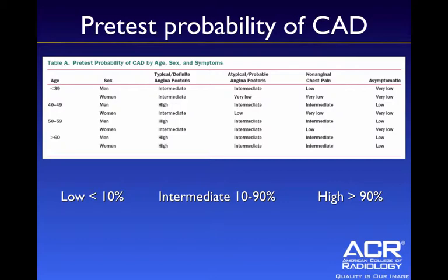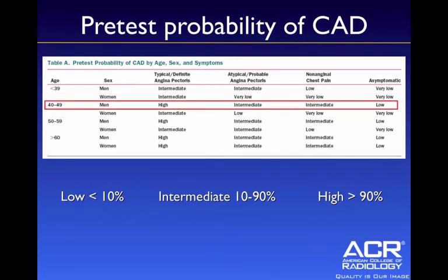The majority of patients are probably going to fall into the intermediate category with a pretest probability of 10 to 90%. As an example, a 40 to 49 year old male who has atypical probable anginal chest pain falls into the intermediate category. If the patient was asymptomatic, they would fall into the low pretest probability category, whereas typical angina pectoris type chest pain would place them in the high risk category.